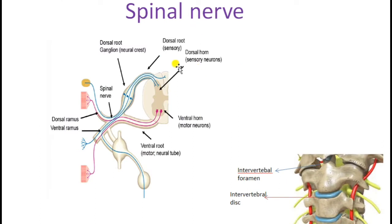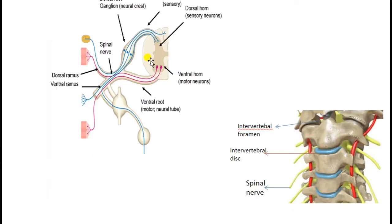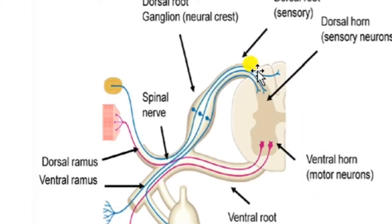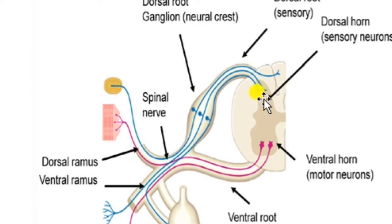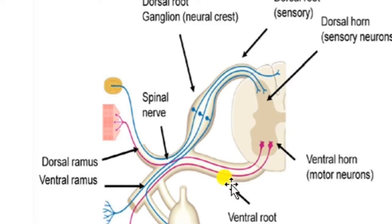A single spinal nerve is formed from the spinal cord. The spinal cord contains gray matter and white matter. The gray matter on the dorsal end has a root known as the dorsal root, and on the ventral side it has another root known as the ventral root.